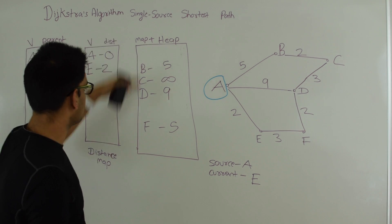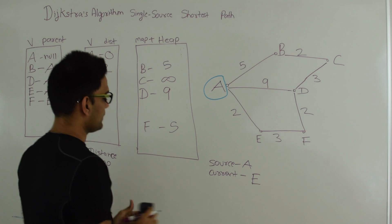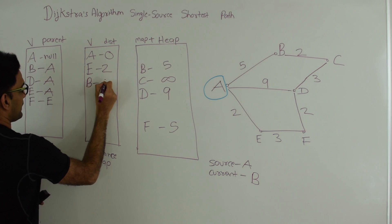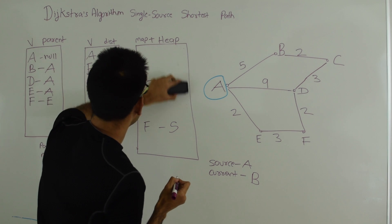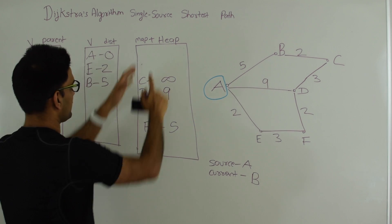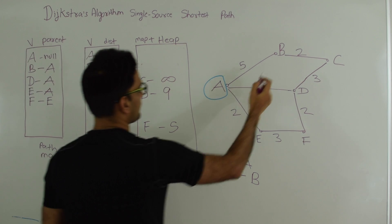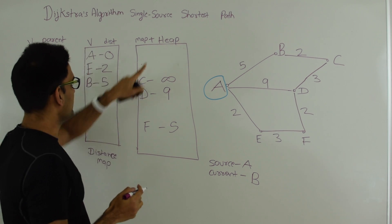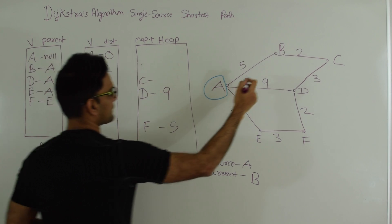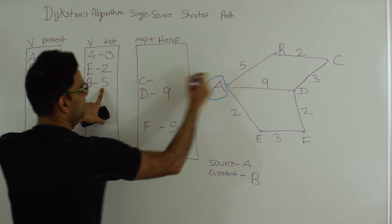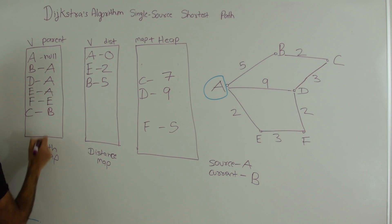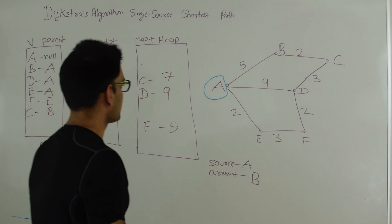We do another extract min and pick B. B's minimum distance from A is 5. We explore B's neighbors. A doesn't exist in the heap so we ignore it. C does exist with value infinity. Going via B, we can reach C in distance 2 plus 5, which is 7. So we update C to 7 and note that C's parent is B. B has no other neighbors.